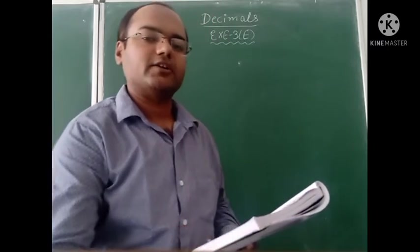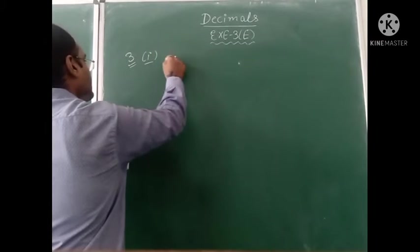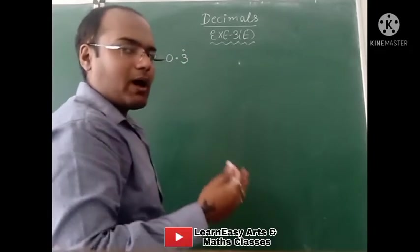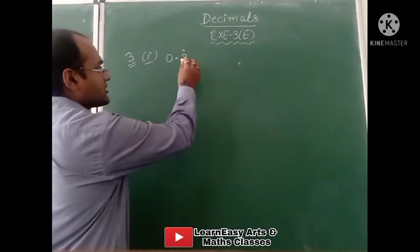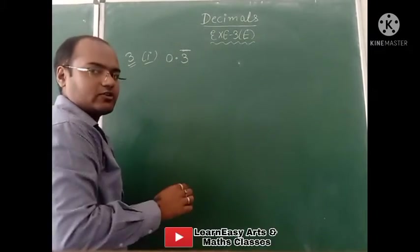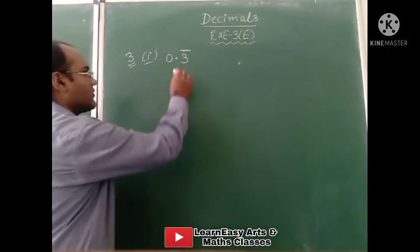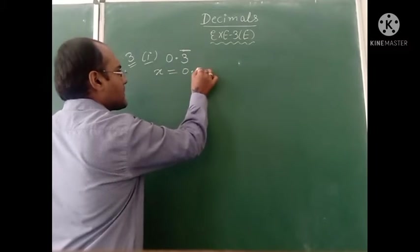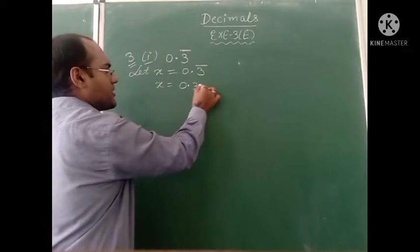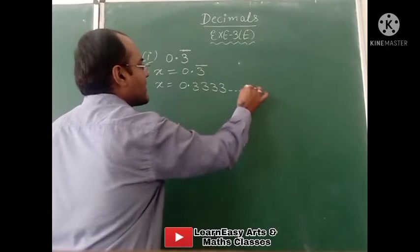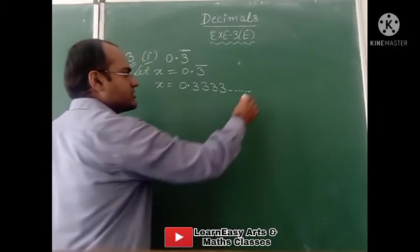Express the following recurring decimal as a fraction. Here in the question recurring decimal is given. Part number 1: 0.3 with a dot on 3 — this dot means bar. Sometimes dots are not visible in the book, so it is better to put bar instead of dot. So the question is 0.3 bar. This is a recurring decimal and we have to write it as a fraction — in the upon form. So first we assume this is the value of x. Let x equal 0.3333 and so on. This is equation number 1.